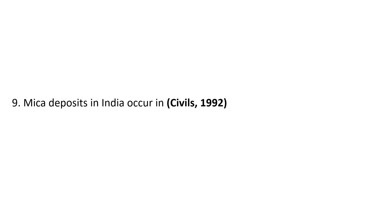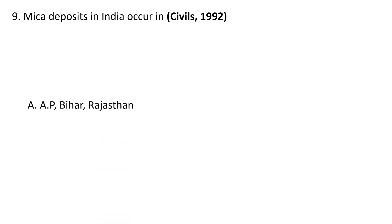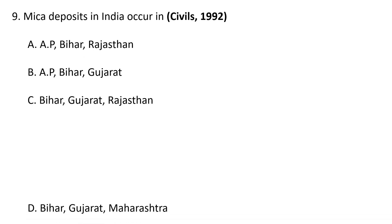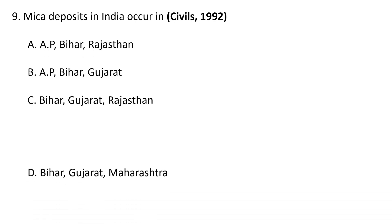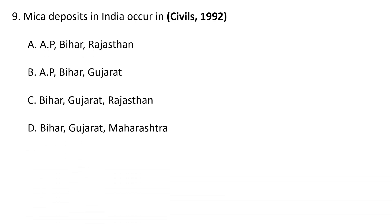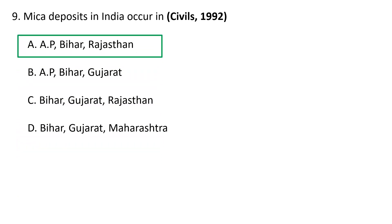Coming to the ninth question: Mica deposits in India occur in A. Andhra Pradesh, Bihar, Rajasthan, B. Andhra Pradesh, Bihar, Gujarat, C. Bihar, Gujarat, Rajasthan, D. Bihar, Gujarat, Rajasthan. The correct answer is A — mica deposits in India occur in Andhra Pradesh, Bihar, and Rajasthan.